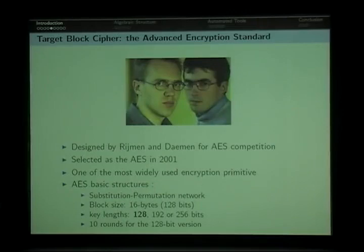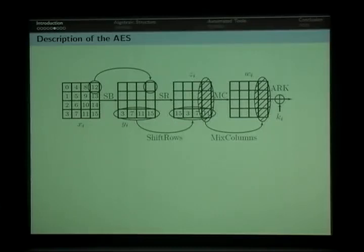So our target is the most natural one. It's the AES, one of the most widely deployed encryption primitives. The AES has been designed by Rijmen and Daemen for the AES competition. It was selected as the winner in 2001. It's a substitution-permutation network that operates on a 128-bit block. And in this talk, we'll focus on the version with 128-bit keys. And this version has 10 rounds.